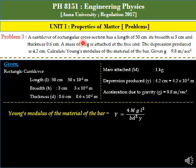Length is 50 centimeter, that is 50 times 10 to the power minus 2 meter. Breadth is 3 centimeter, 3 times 10 to the power minus 2 meter. Thickness d is 0.6 centimeter, 0.6 times 10 to the power minus 2 meter.